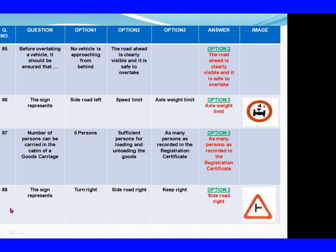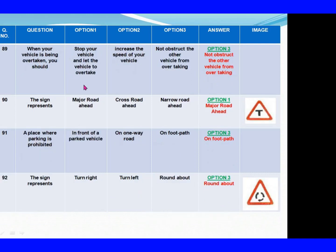Question 88: The sign represents. Option 1: Turn right. Option 2: Side road right. Option 3: Keep right. The right answer is Option 2: Side road right. Question 89: When your vehicle is being overtaken, you should. Option 1: Stop your vehicle and let the vehicle overtake. Option 2: Increase the speed of your vehicle. Option 3: Not obstruct the other vehicle from overtaking. The right answer is Option 3: Not obstruct the other vehicle from overtaking.